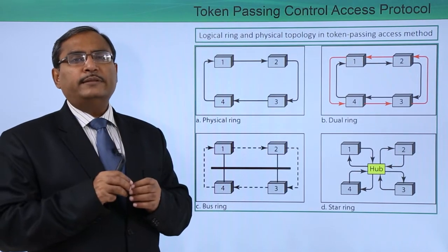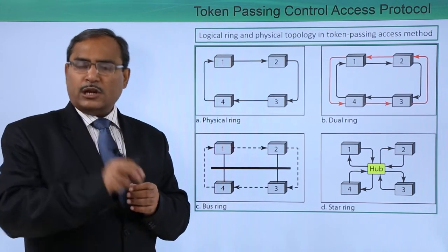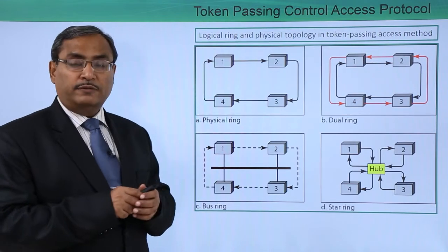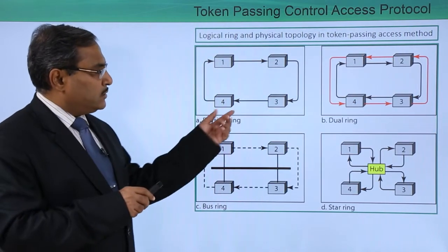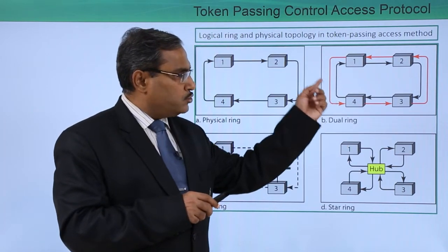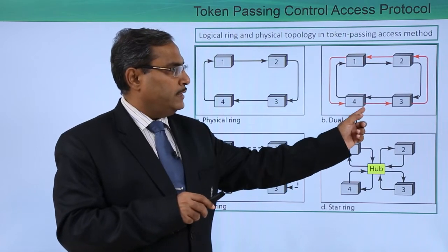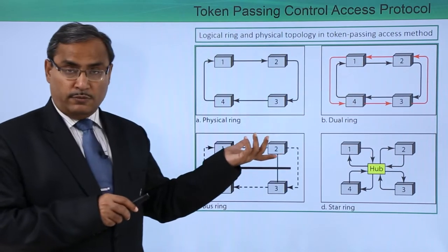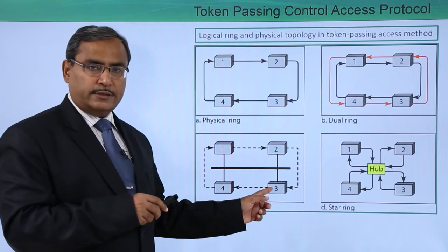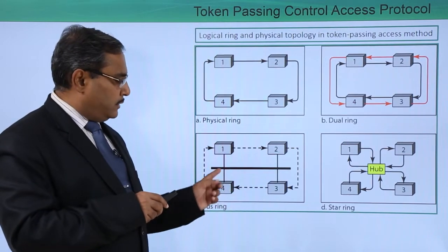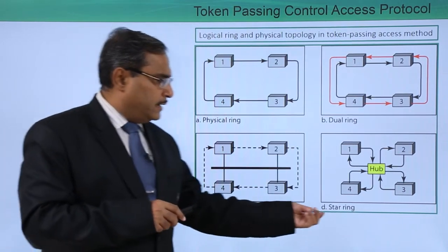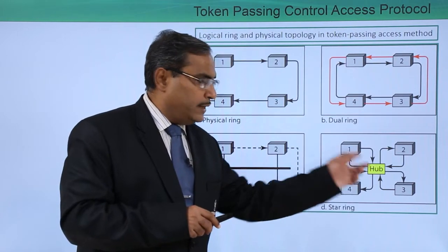In this total networking environment there will be a single token, so at a time only one node can communicate. This is the main purpose in case of the physical ring. The token will be rotating in this way. In case of a dual ring, the token can also rotate in the other direction. There is also the bus ring, where stations are connected in bus topology but the token logically rotates in a particular format, and the star ring where the token rotates in its own particular format.